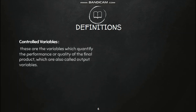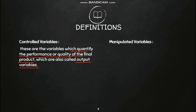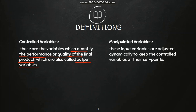Moving on to more definitions: 'control variables' are those variables which quantify the performance or quality of the final product. These are also known as output variables. Then, 'manipulated variables' — as the name suggests, these are variables which are adjusted dynamically to keep the control variables at their set points. We minimize the difference between the set points and the controlled variables using manipulated variables.